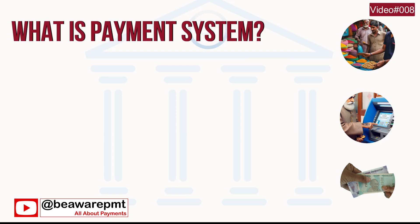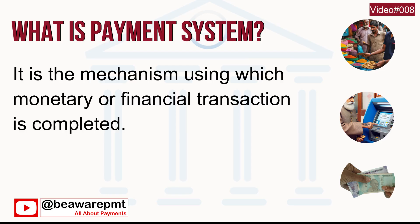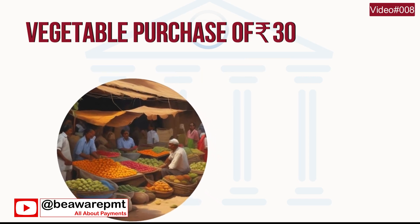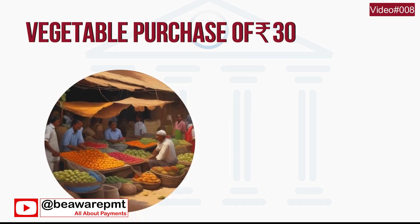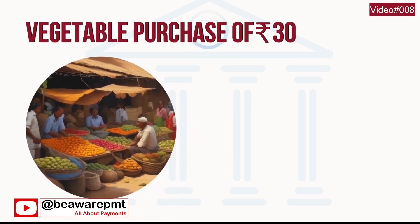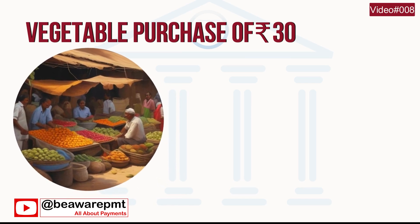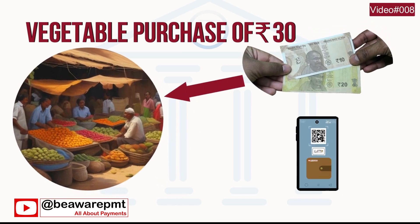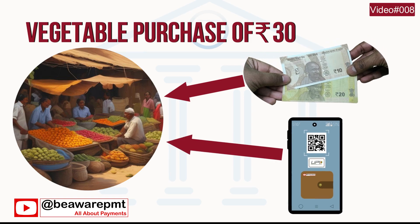What is a payment system? It is the mechanism using which a monetary or financial transaction is completed. For example, if you are purchasing vegetables for 30 rupees today, there are multiple ways to pay — like by cash or by UPI using a QR code. Cash is one payment system and UPI is another.